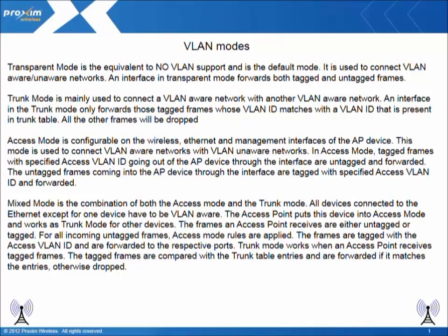Mixed mode is the combination of both Access mode and Trunk mode. All devices connected to the Ethernet except for one device have to be VLAN-aware. The access point puts that one device into Access mode and works in Trunk mode for all other devices. For all incoming untagged frames, Access mode rules are applied — the frames are tagged with the Access VLAN ID and forwarded to the respective ports. When the access point receives tagged frames, Trunk mode rules apply: frames are compared with the trunk table entries and forwarded if they match, otherwise dropped.